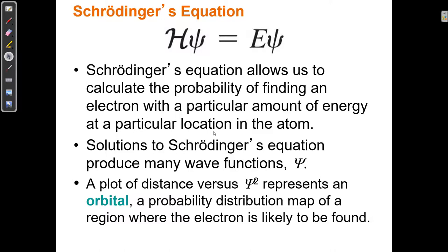Schrodinger's equation describes the wave properties of particles. So it allows us to calculate the probability of finding an electron with a particular amount of energy at a particular location in the atom. Solutions to Schrodinger's equation produce many wave functions, which is this letter, psi. A plot of distance versus psi squared represents an orbital, a probability distribution map of a region where the electron is likely to be found.